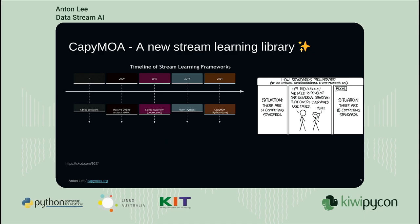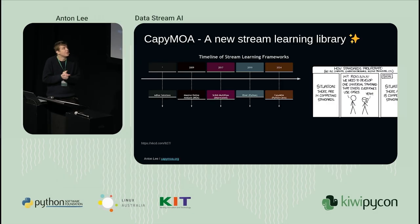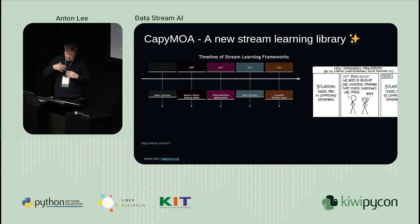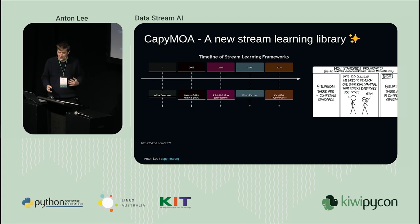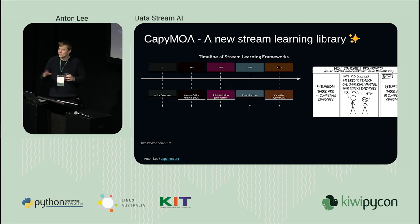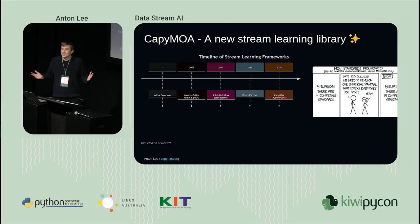Why are we making this new thing - Capimoa? This is sort of a history of the data stream learning niche. It's useful when you're trying to make a new thing to look at what's come before and ask yourself: do we need this? Are we adding anything to the community? That's why I've got this XKCD comic about when you try to make a new standard, you've just contributed to competing standards.